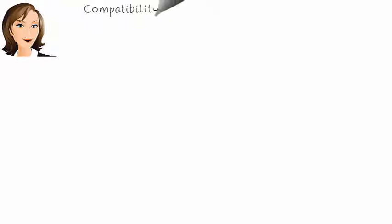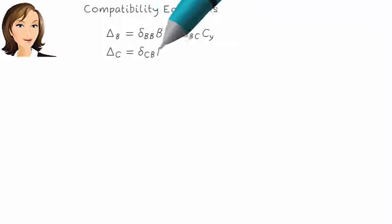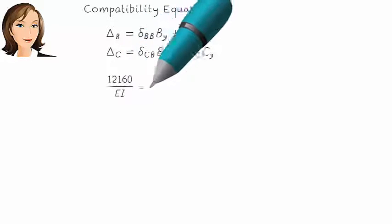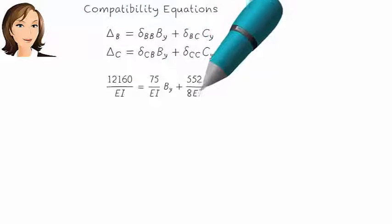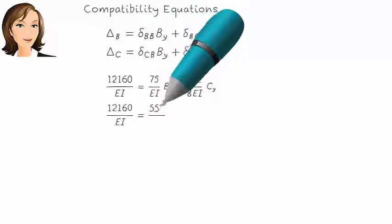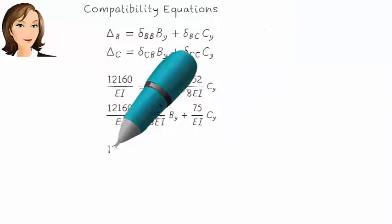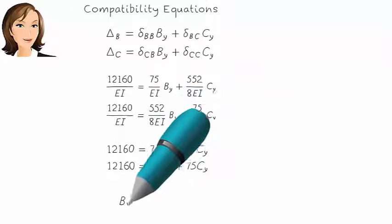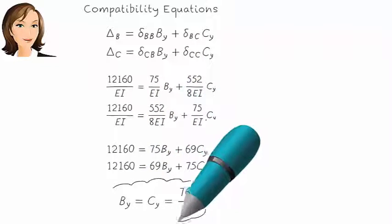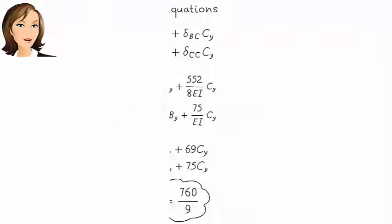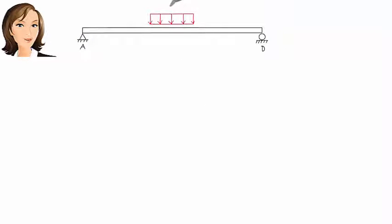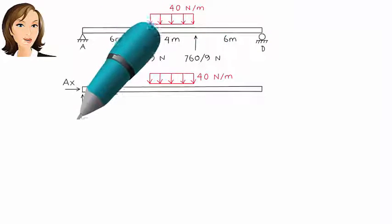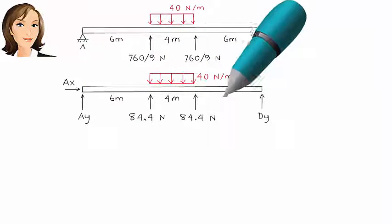Now we can write our compatibility equations and solve them for the redundant forces. The remaining unknown reaction forces — there are three of them — can now be calculated easily using the equilibrium equations.